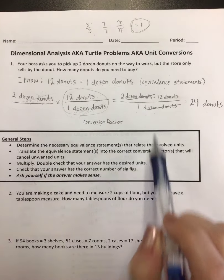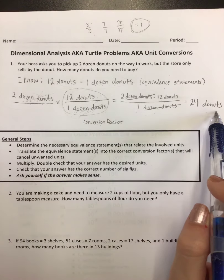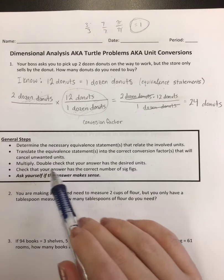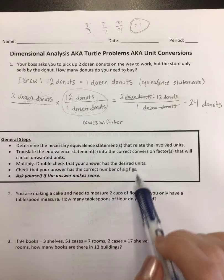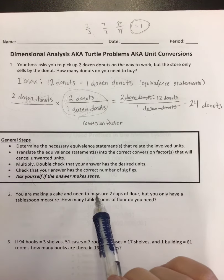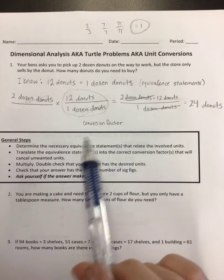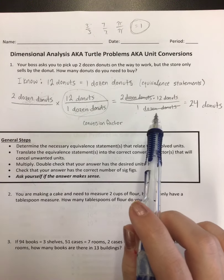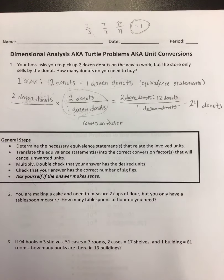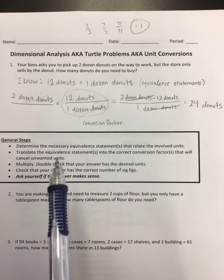Then double check that your answer has the desired units. Yes, everything cancelled but donuts, which is what we wanted. Then check that your answer has the correct number of sig figs. This is really interesting. This one right here, sig figs really aren't applicable because we're just kind of counting.